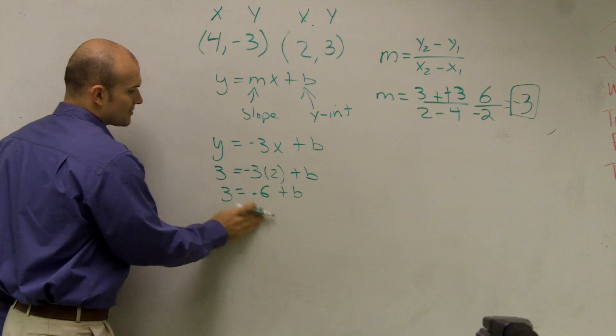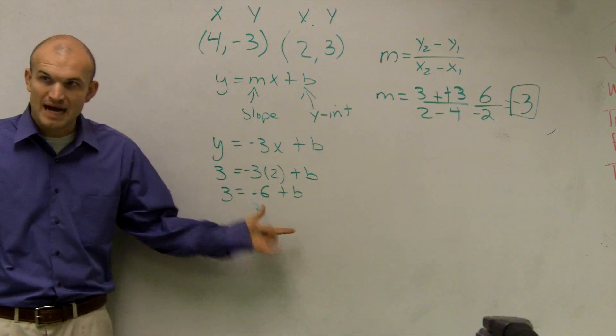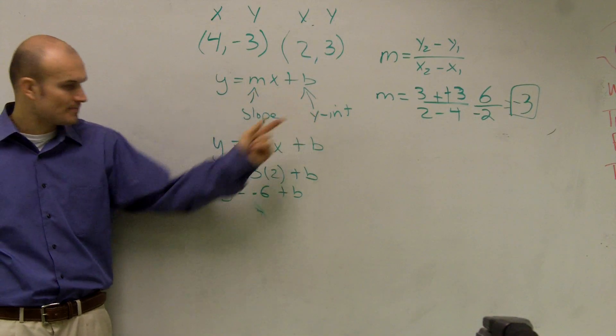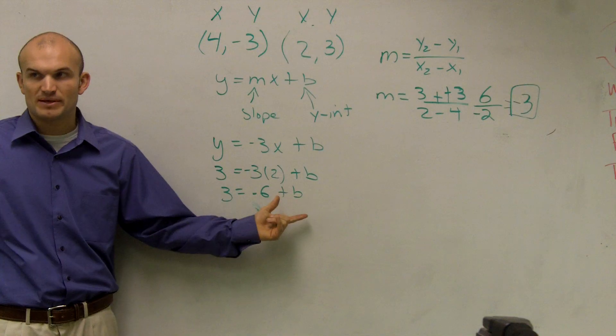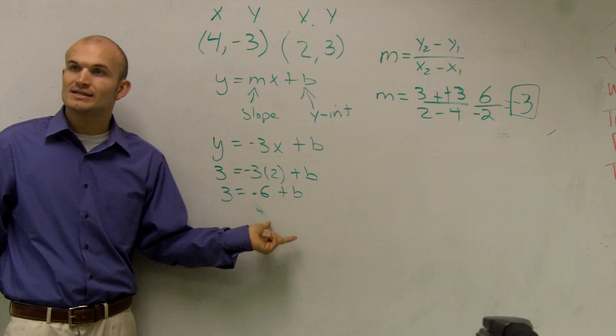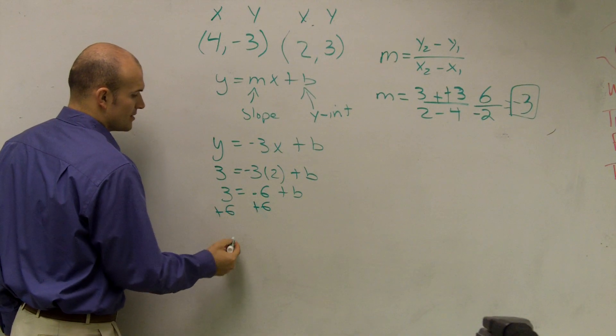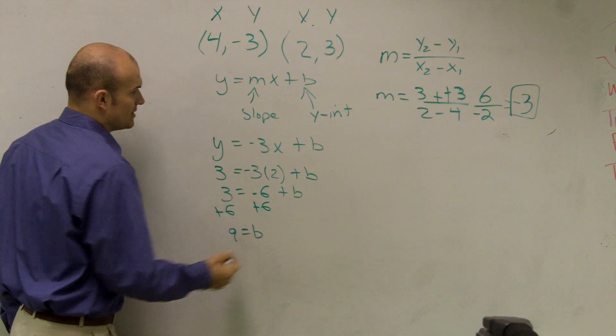Now I need to solve for b to finish the equation. I have negative 6 plus b, which is the same as subtracting 6. To get rid of that, I add 6 to both sides. So 9 equals b.